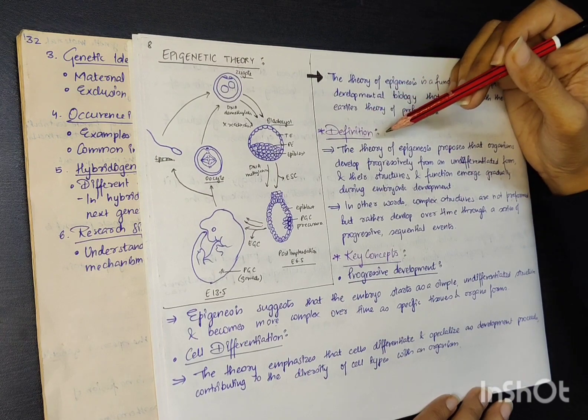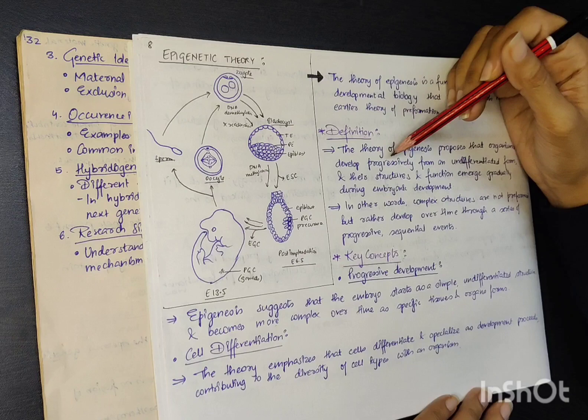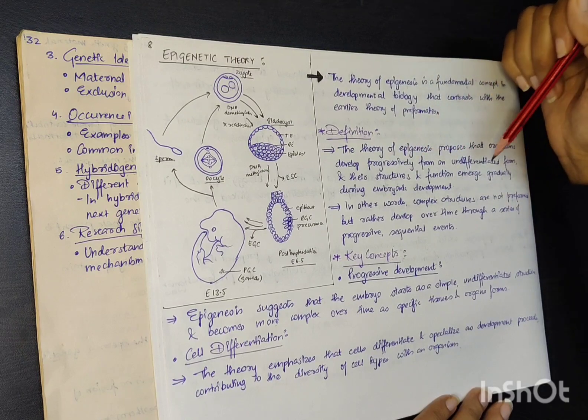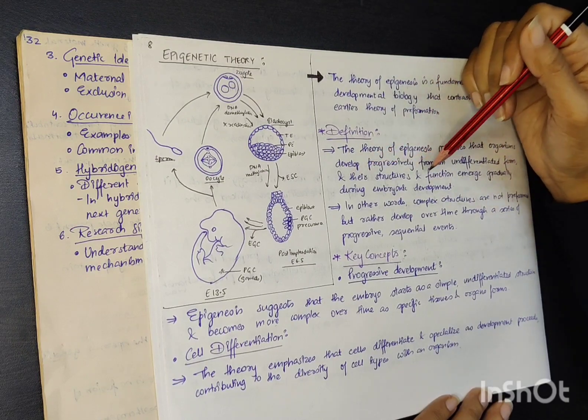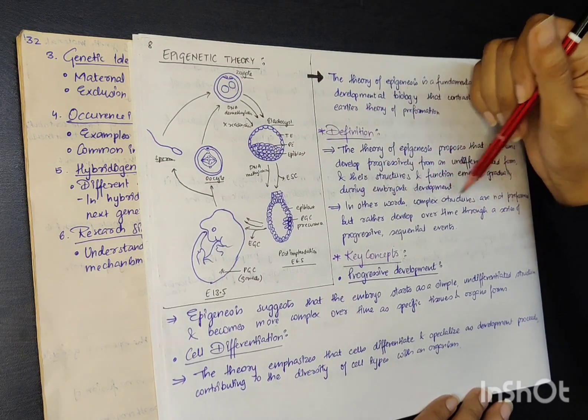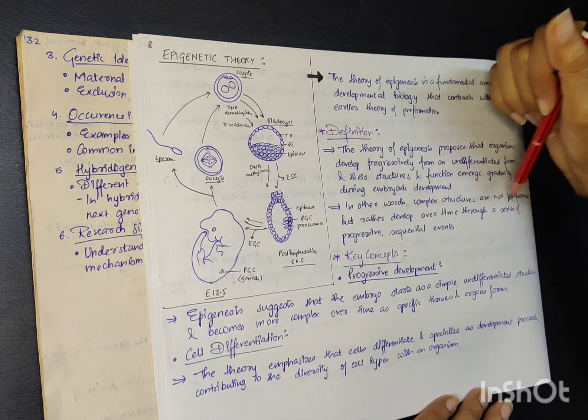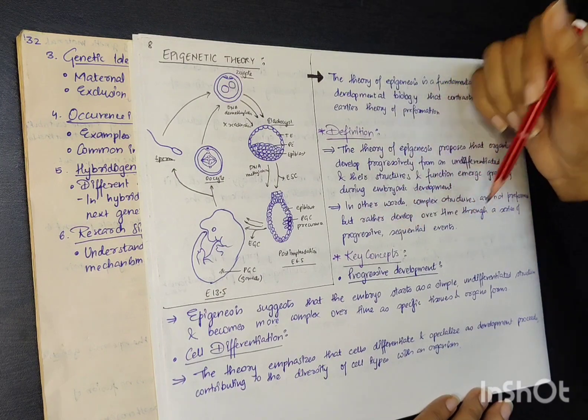The definition of epigenetic theory is: the theory of epigenesis proposes that organisms develop progressively from an undifferentiated form and their structures and function emerge gradually during embryonic development. In other words, complex structures are not preformed, but rather develop over time through a series of progressive sequential events.